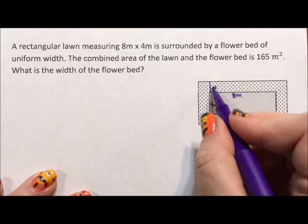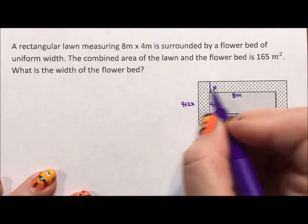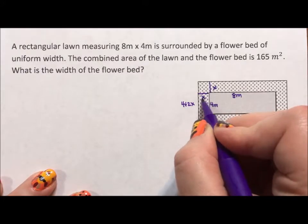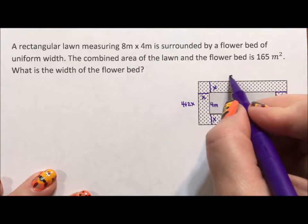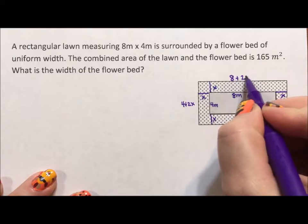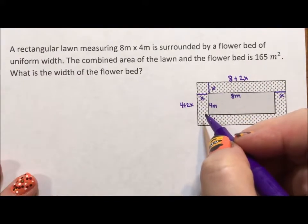Because the width hits both top and bottom, this side becomes 4 plus 2x. The width is here and here, uniform width all around, which means this is 8 plus 2x. So that's the measurements of the larger rectangle.